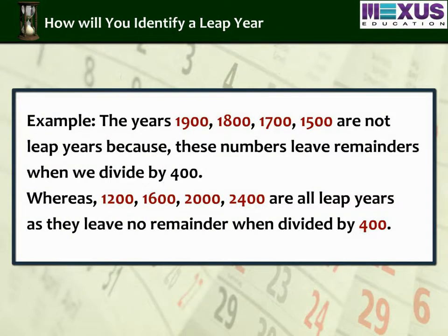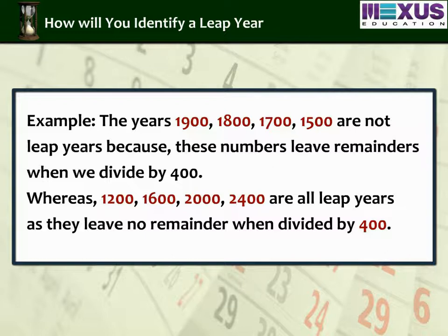For example, the years 1900, 1800, 1700, and 1500 are not leap years because these numbers leave remainders when we divide by 400. Whereas 1200, 1600, 2000, and 2400 are all leap years, as they leave no remainder when divided by 400.